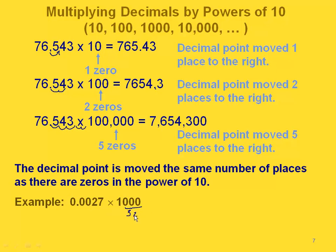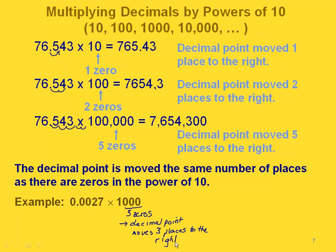So in this example, we have three zeros. That means we're going to move our decimal point three places to the right — one place, two places, three places. So now we have 2.7 as our answer.